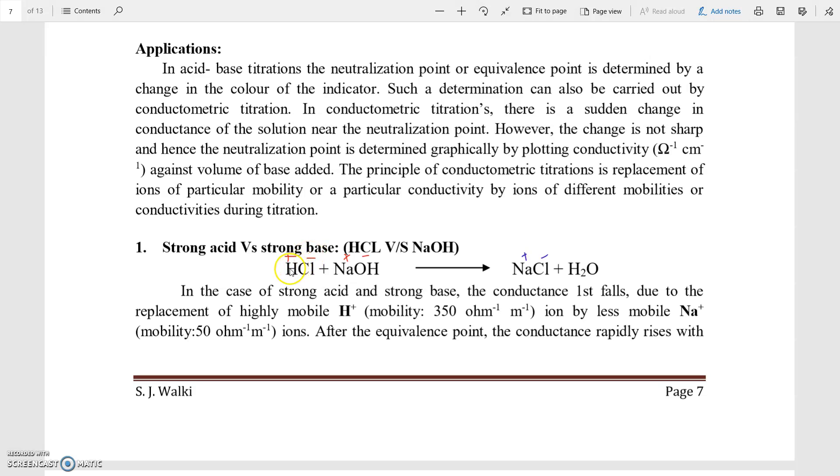Here, we are going to take the NaOH in burette and we are going to take the HCl in the beaker. In HCl, we are going to dip the conductivity cell. Initial conductivity of the HCl solution is noted. Then, we are going to add the NaOH from the burette into beaker.